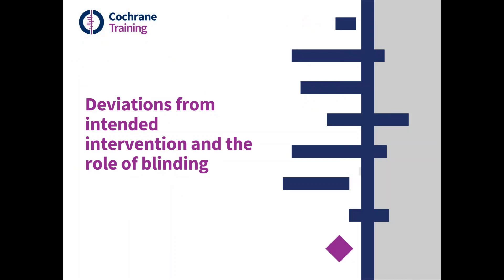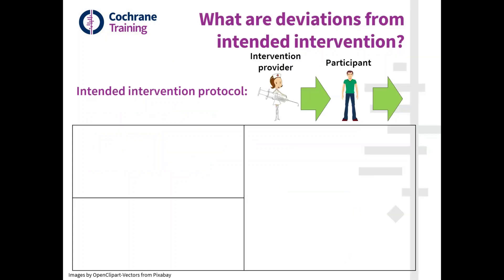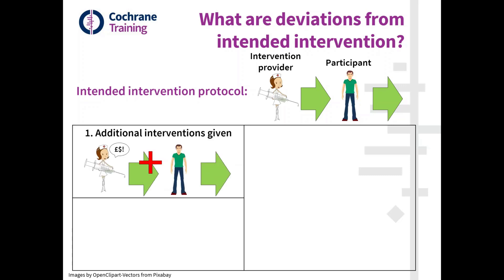We're first going to talk about what we mean by deviations from intended intervention, and then talk about the role of blinding. Here's a graphic that tries to explain what we're talking about. The starting point is to think: what is the intended intervention? The provider of the intervention has to do something that's intended, and the participant is going to receive something and potentially do something that's intended. Interventions are all an interaction of some sort between a provider and a participant, and we want to know exactly what we intend to do.